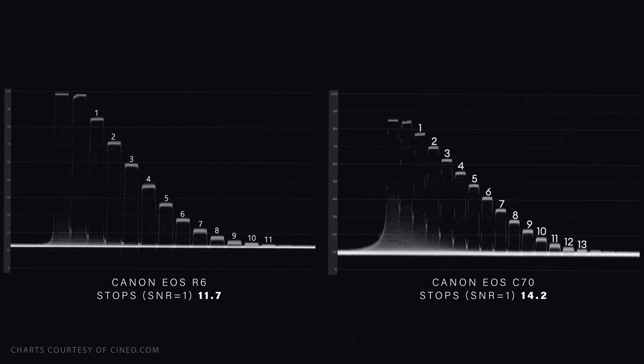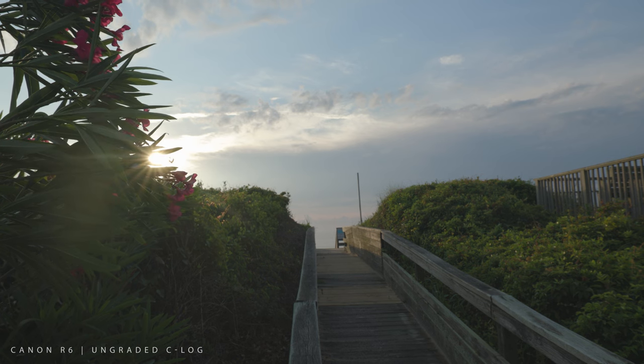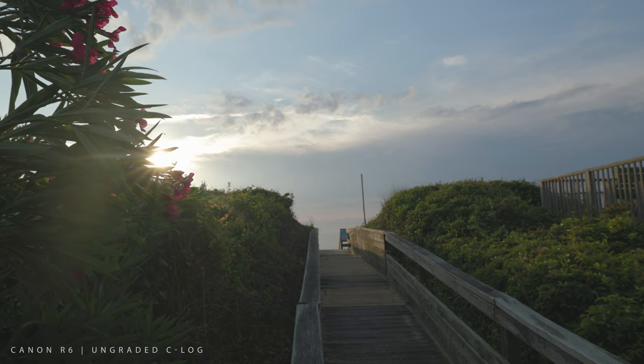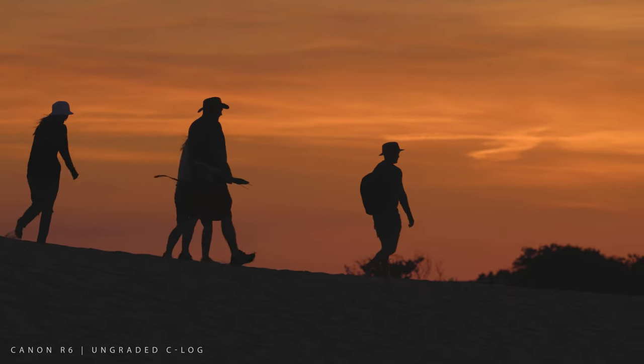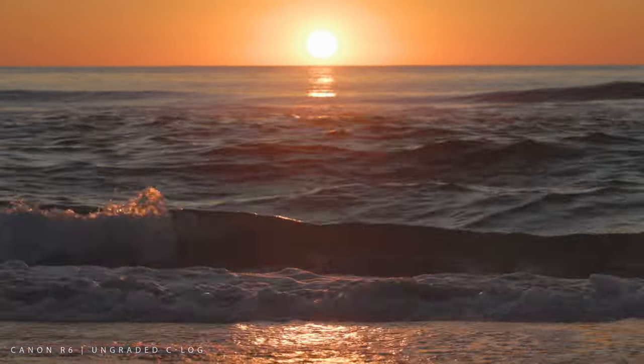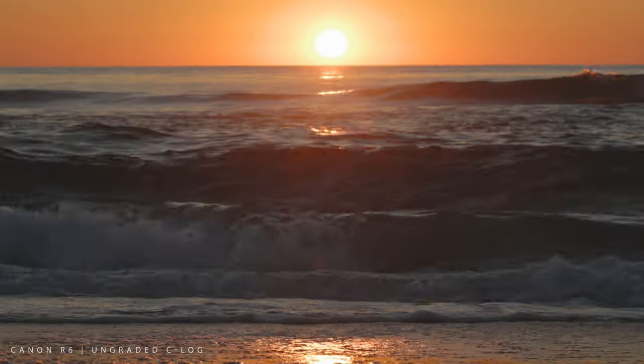Canon's reasoning for not including C-Log 2 in cameras like the R6 or R5 is that the sensor doesn't create enough dynamic range to really warrant that profile. C-Log — the original Log profile created by Canon — is probably the closest to Rec. 709 you're going to get. It's still a flat profile but has a decent amount of contrast and saturation, is the easiest to grade, has the least amount of noise, but also the least dynamic range in Canon's Log profile range.